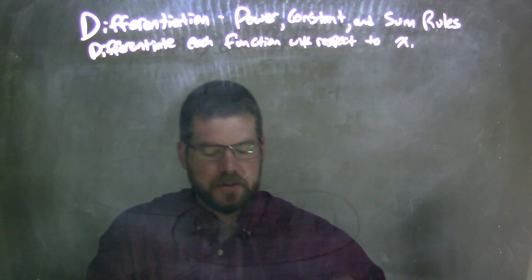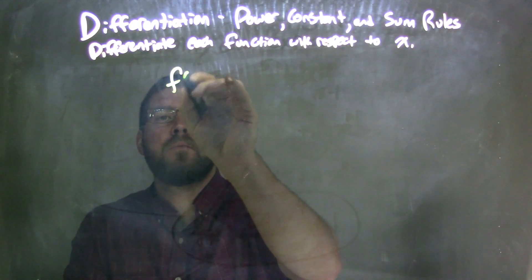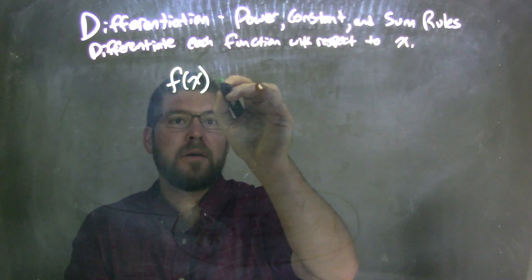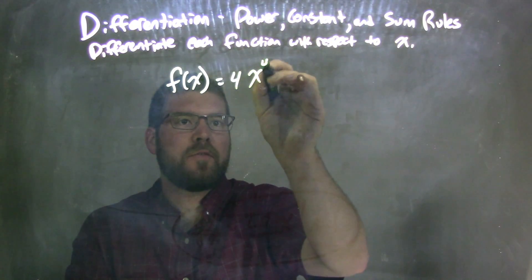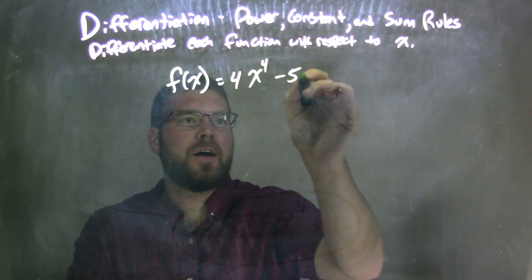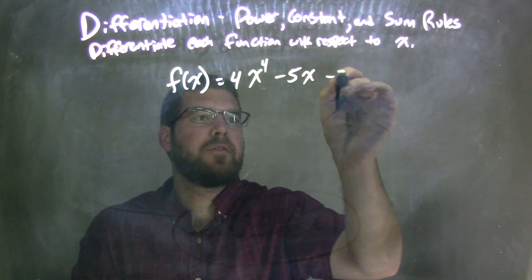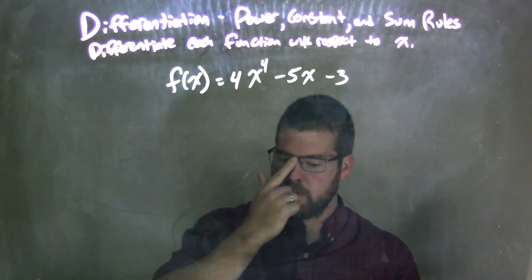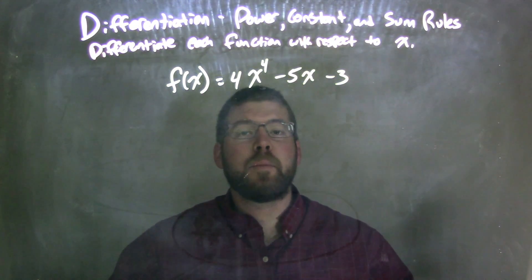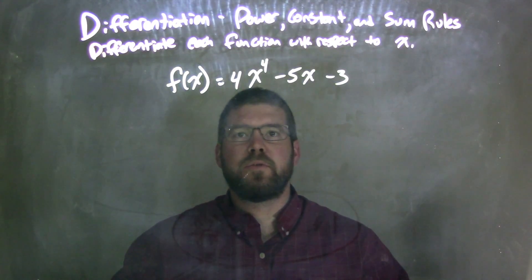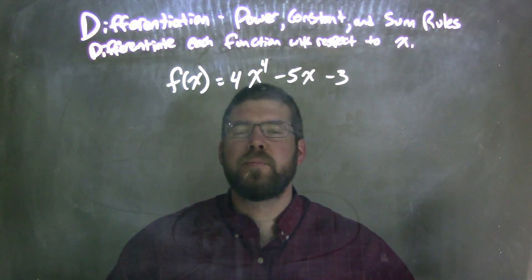So if I was given this function, f of x is equal to 4x to the 4th minus 5x minus 3. Well, if I'm going to derive this, I'm going to be using the power rule a few times, and the constant rule, and the sum rule.